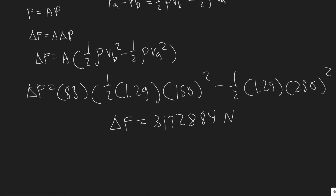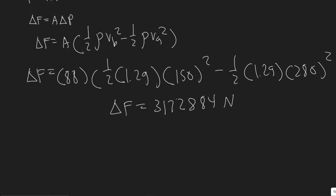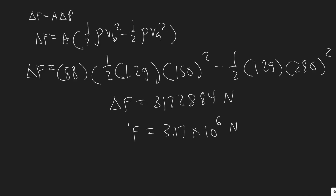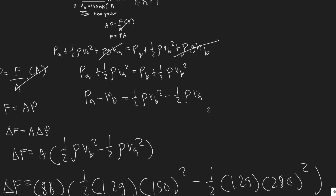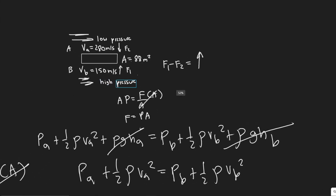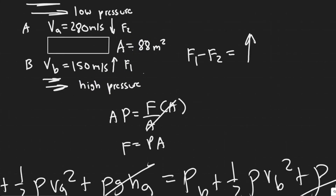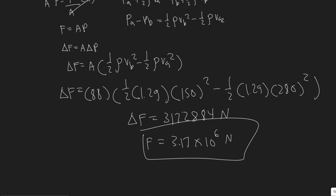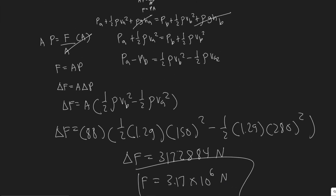The units are Newtons because we're dealing with force. The result is 3.17 times 10 to the 6 Newtons. That's your force — the change in force between the two pressure points — which is the upward lift force. So the upward force in this problem is 3.17 × 10⁶ Newtons.